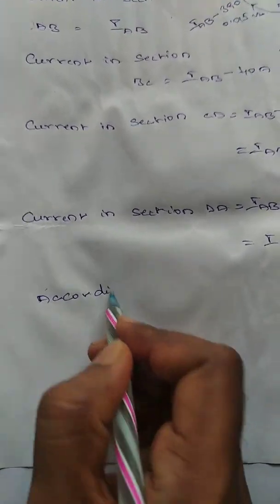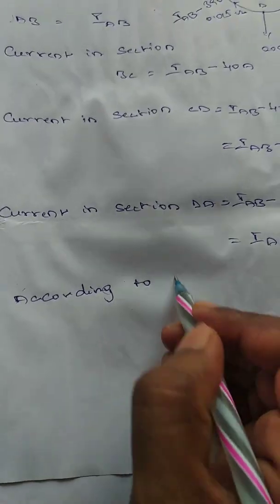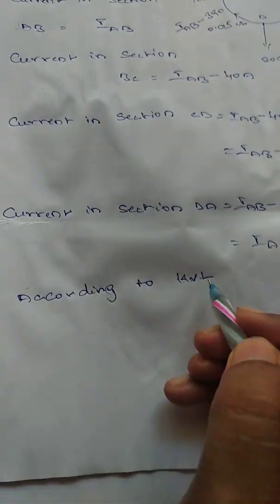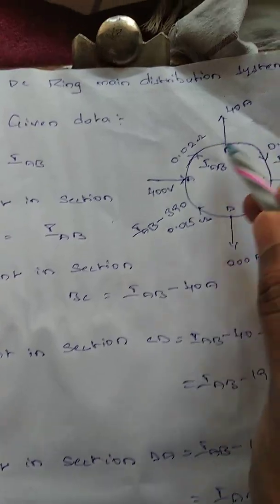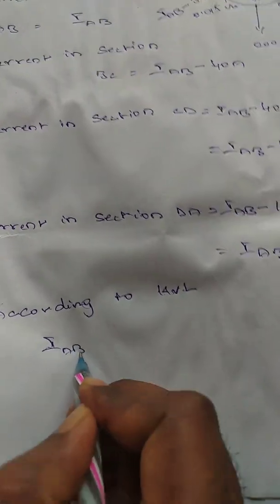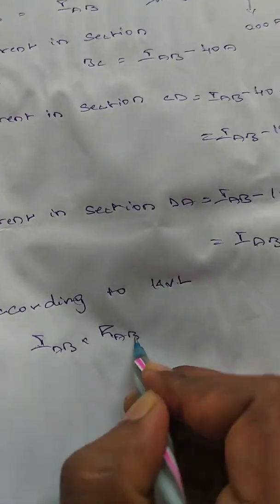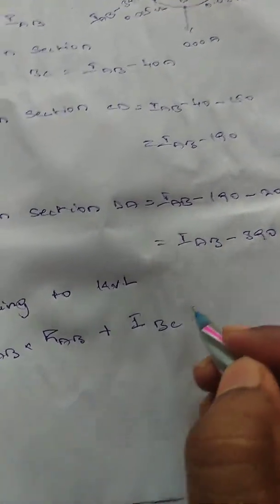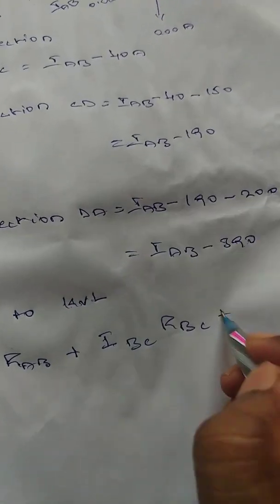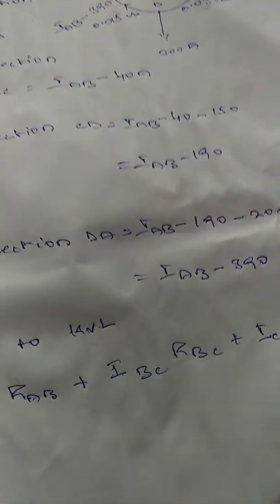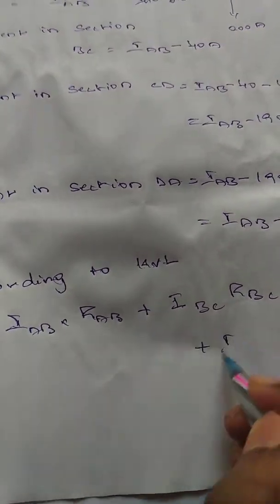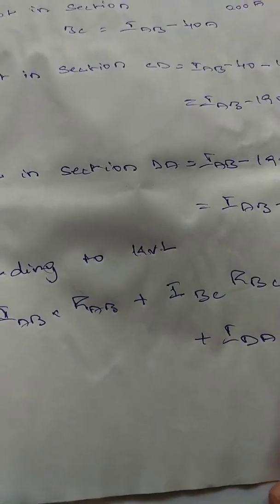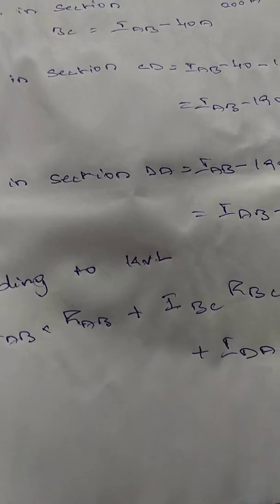According to KVL, the sum of all the voltage drops is equal to zero. So: current IAB into resistance RAB, plus current IBC into resistance RBC, plus current ICD into resistance RCD, plus current IDA into resistance RDA, is equal to zero.